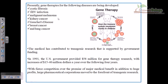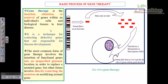Presently, gene therapies are being developed for diseases including cystic fibrosis, HIV infection, and several cancers such as malignant melanoma, kidney cancer, breast cancer, and lung cancer. Most active research is happening in the United States due to consistent government funding. Germany and the UK are also doing some research, while other regions of the world find gene therapy too cost-prohibitive.